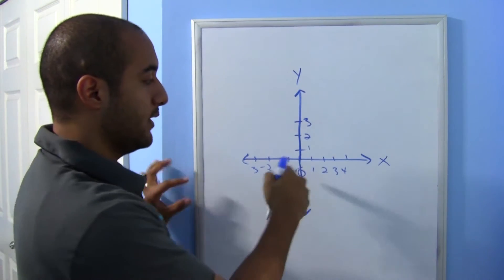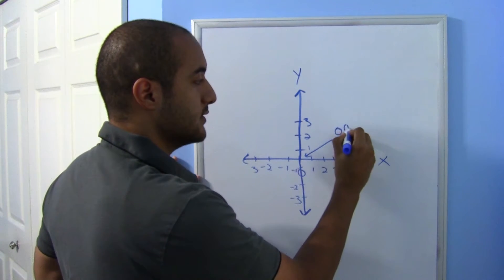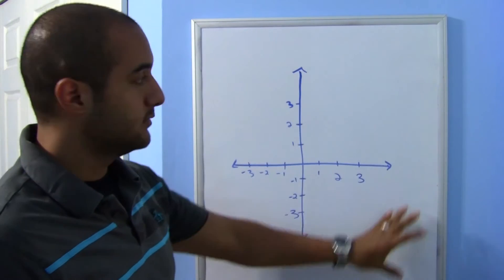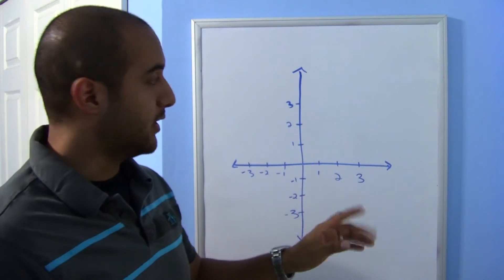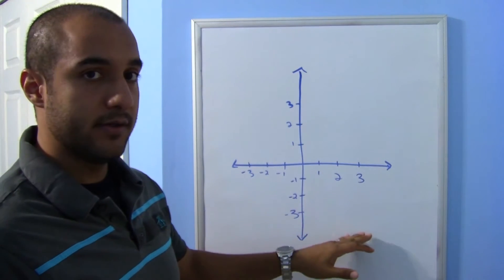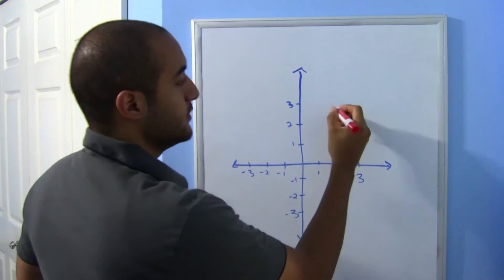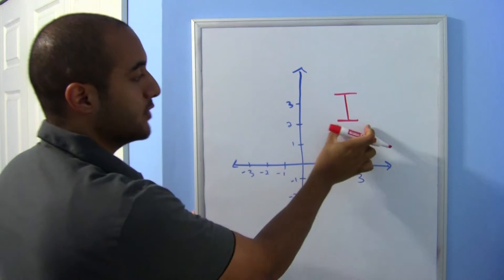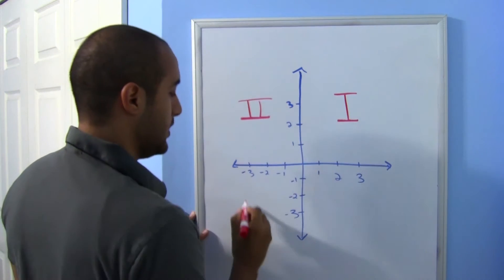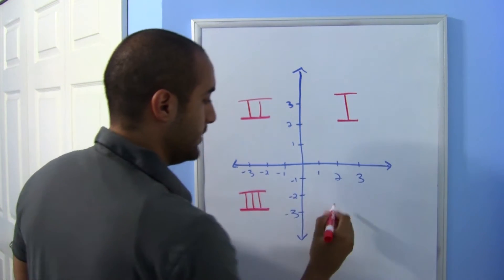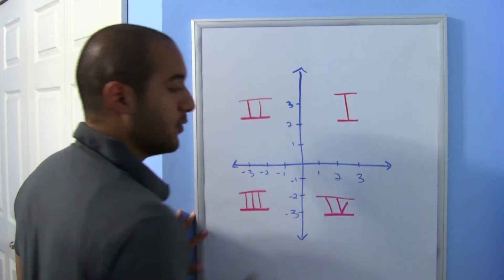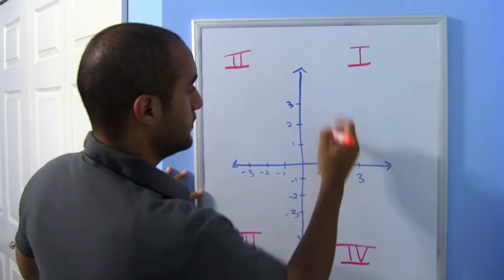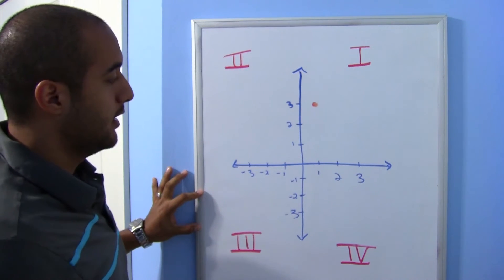Where the axes meet, this is called the origin. Our coordinate system has broken our plane into four parts: one, two, three, four. We name these parts using Roman numerals — first quadrant, second quadrant, third quadrant, and fourth quadrant. ('Quadrant' means four.)